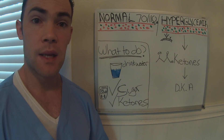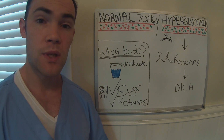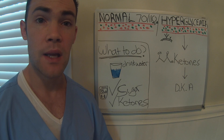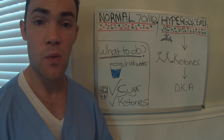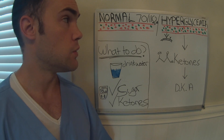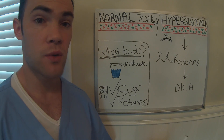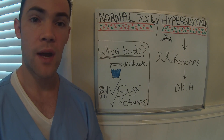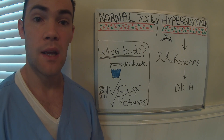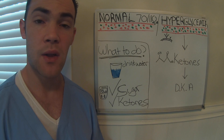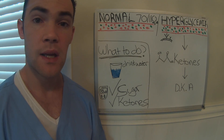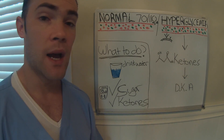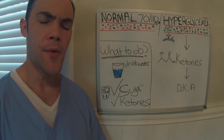The fourth cause is being sick. UTIs, urinary tract infections, or other infections like pneumonia can put your body into a state of stress, which can lead to hyperglycemia. The fifth and final cause is stress. If you have a very stressful lifestyle, that can cause changes in your body which can also result in high blood sugar.